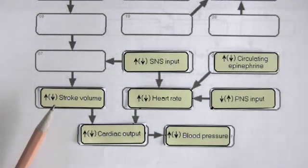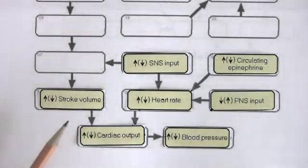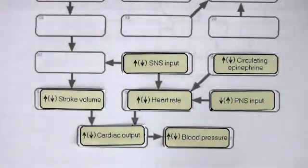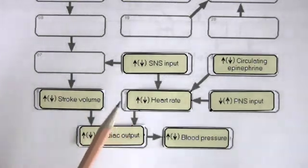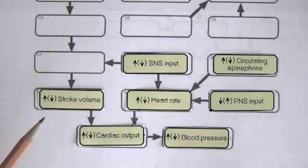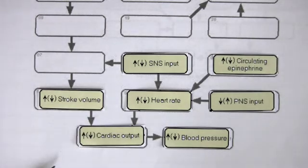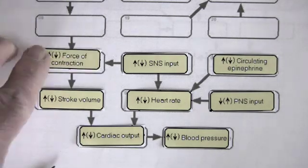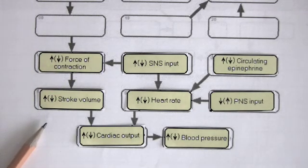What are the factors that affect stroke volume? One is sympathetic input to the heart. As we saw, stroke volume is influenced by the force of contraction. If you increase the force of contraction, you increase the volume pumped per beat.